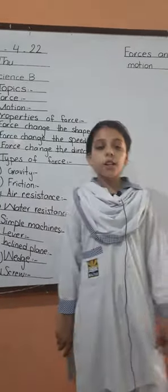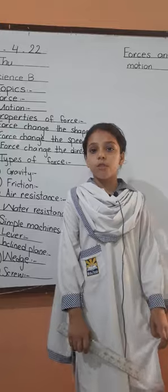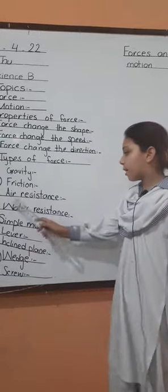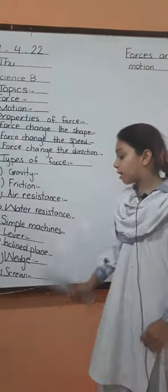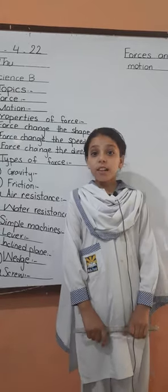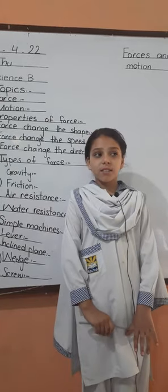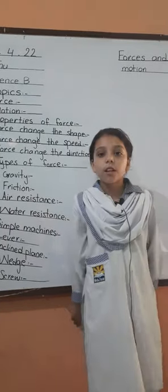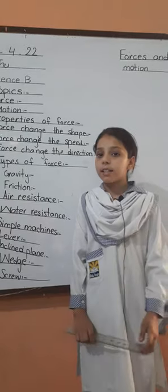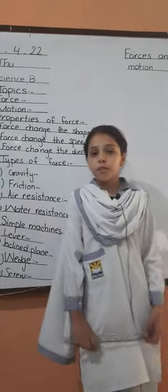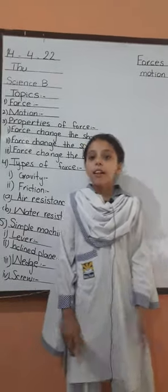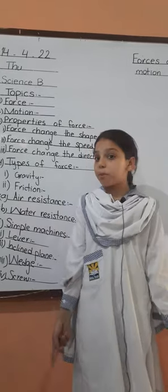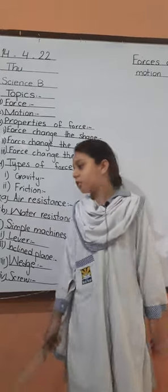Friction. Friction is a force that occurs when two surfaces rub together. Air resistance. Air resistance is a type of friction — the air slows the object down. For example, when I walk and something pushes me back, that is air resistance.